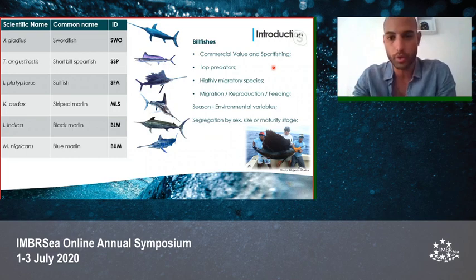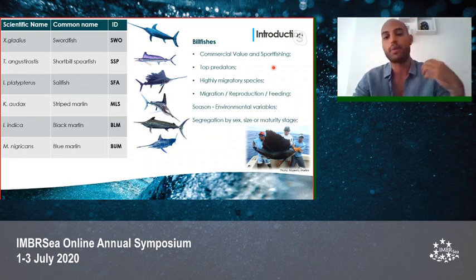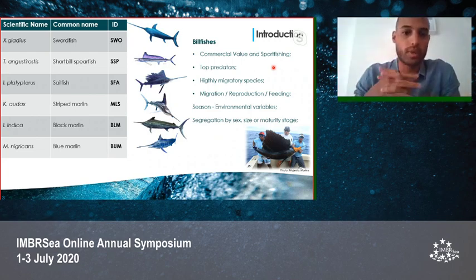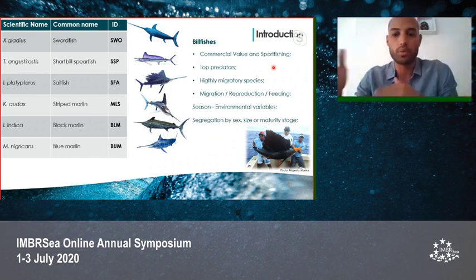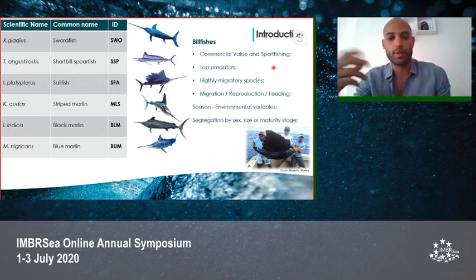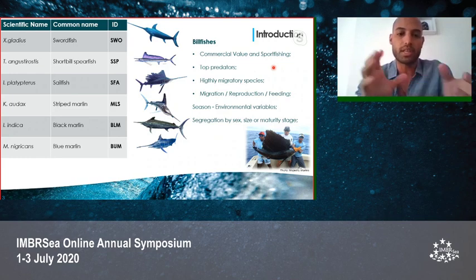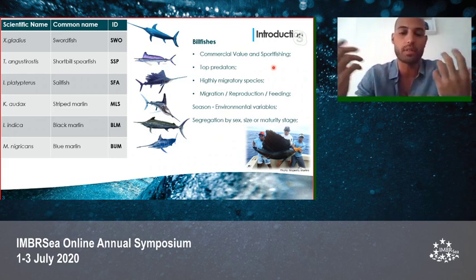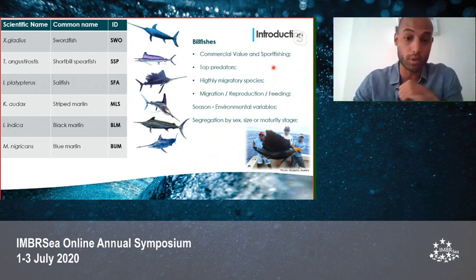Billfishes are top predators of the marine food web and are considered highly migratory species, performing broad movements along the ocean basin. These migration patterns are usually related to reproduction and feeding behavior, which can be affected by environmental variables. Their distribution can be segregated by sex, size, or maturity stage, by choosing a suitable habitat or environment for feeding or reproduction purposes.